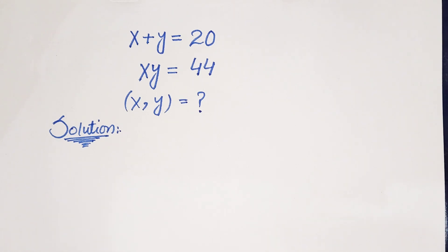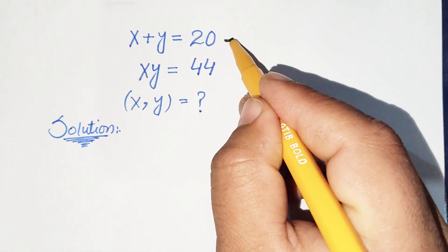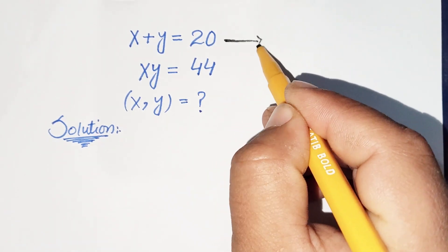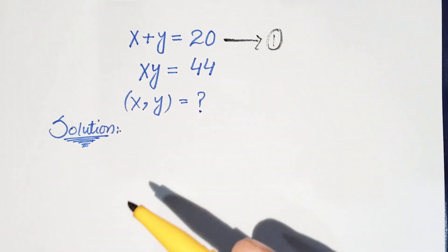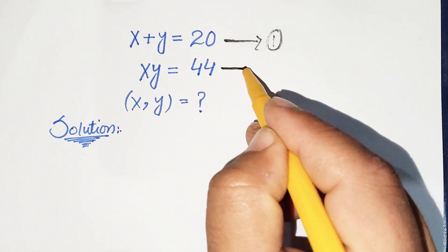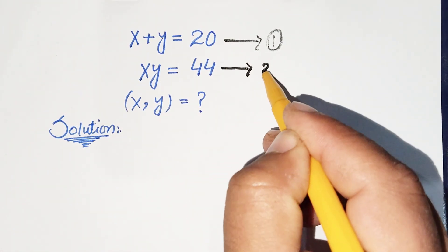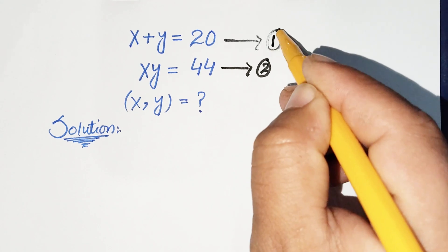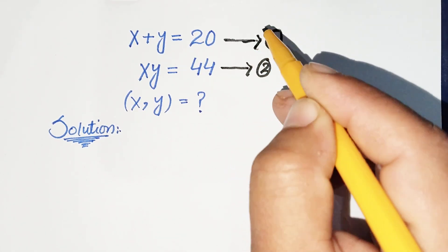The first equation is x plus y is equal to 20, and x times y is equal to 44. In the first equation we see the sum of x and y, and in the second equation it is the product of x and y. We'll call these equation number 1 and equation number 2.